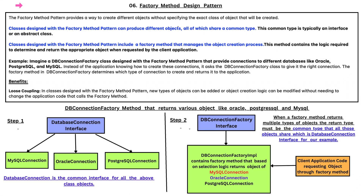In this video, we are going to look at the Factory Method Design Pattern. The Factory Method Pattern provides a way to create different objects without specifying the exact class of object that will be created. Classes designed with the Factory Method Pattern can produce different objects, all of which share a common type. This common type is typically an interface or an abstract class.